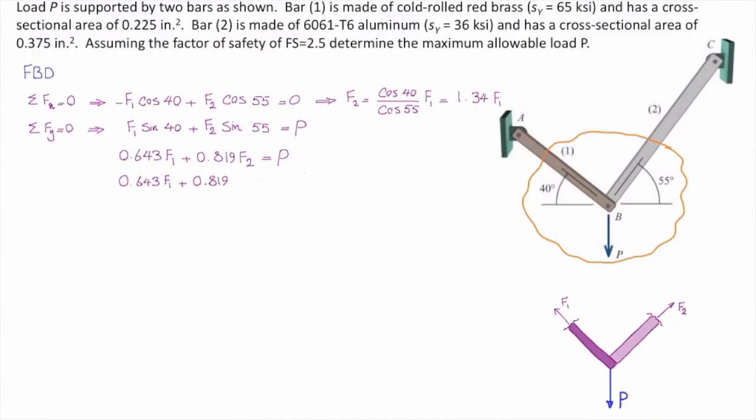So that would be 0.819 times 1.33 F1. And that is equal to P. And I can determine how much is F1 from this equation. F1 would be 0.576 P.